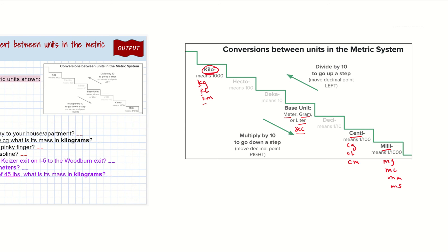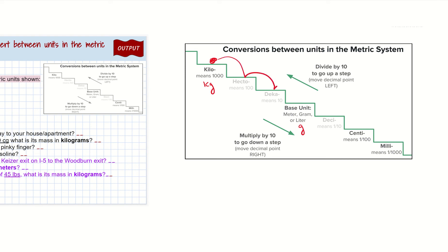This chart is going to help you learn how to convert between units, because these are all related by factors of 10. If you start in one spot, like let's say we were in kilograms, and we wanted to convert into grams — the base unit — you are one, two, three steps away. So let's say we had 0.200 kilograms and we wanted to convert that into grams.